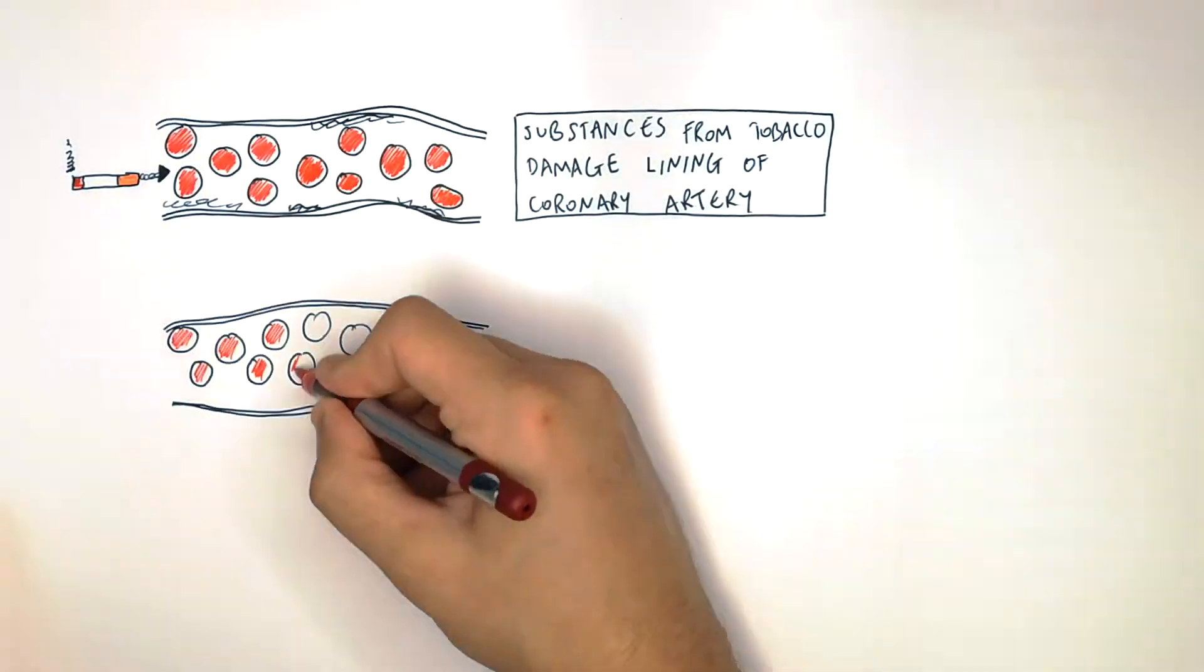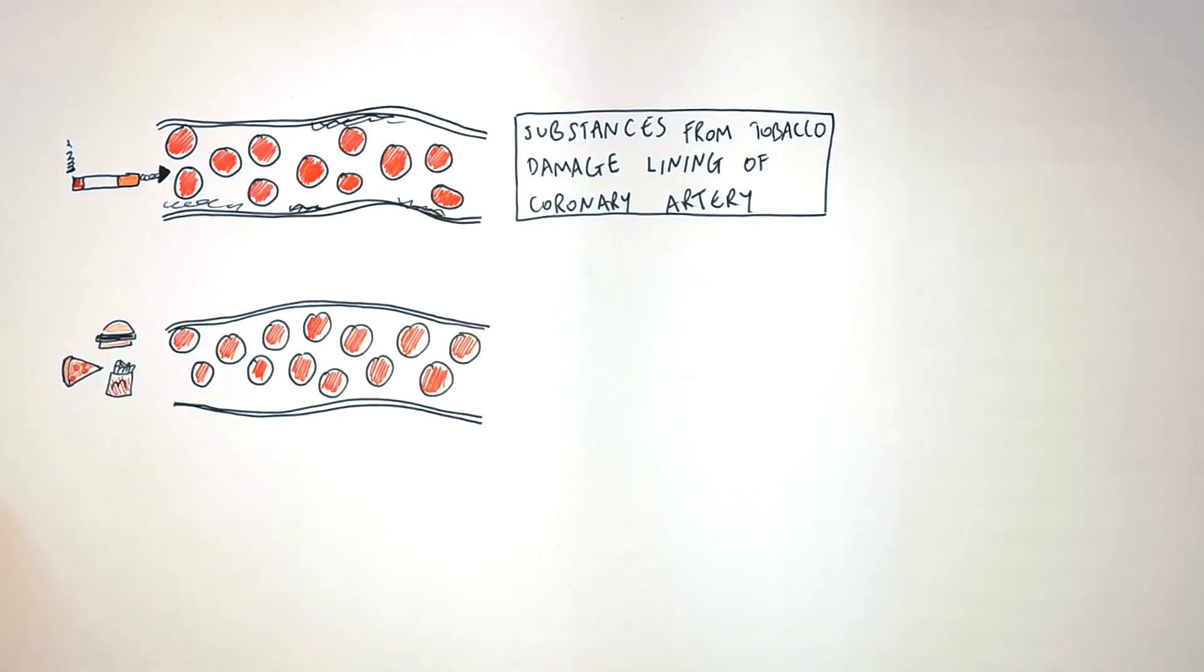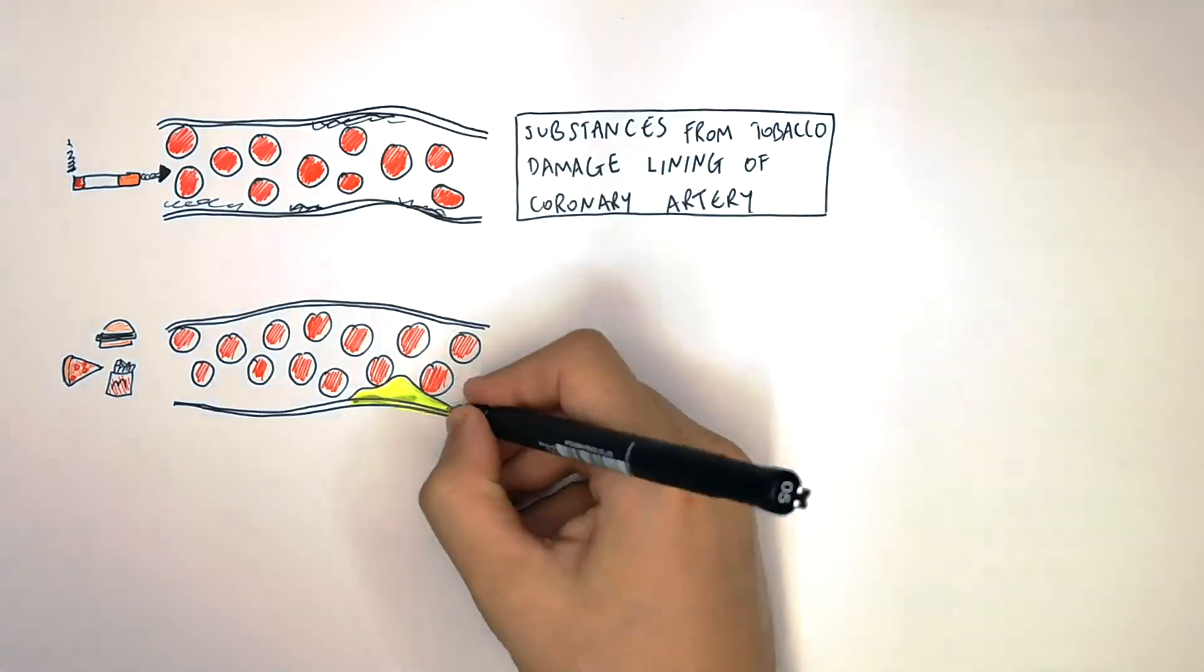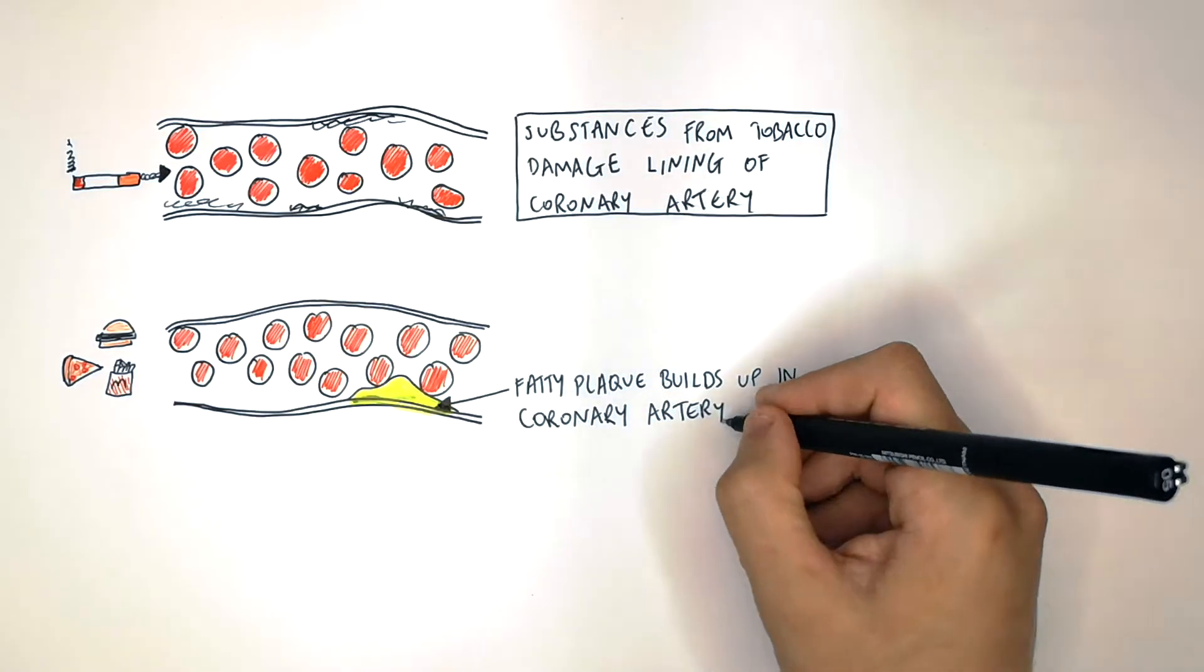Eating too many fatty foods will also impact the coronary artery. Eating fatty foods is going to cause an increase in the buildup of fatty plaques in the coronary artery. The fatty plaque will build up on the coronary artery wall.